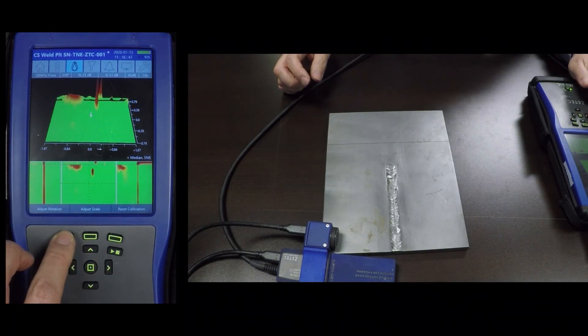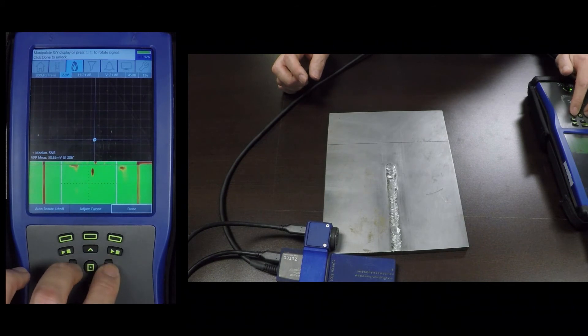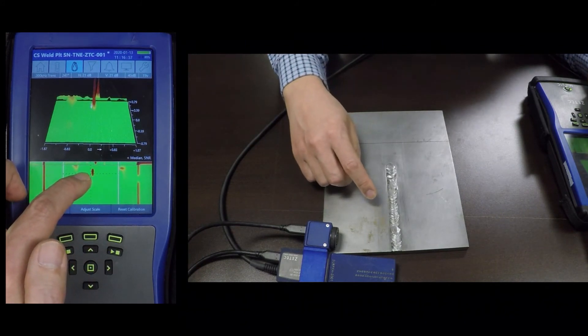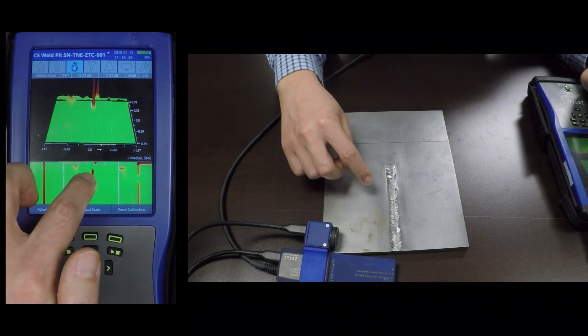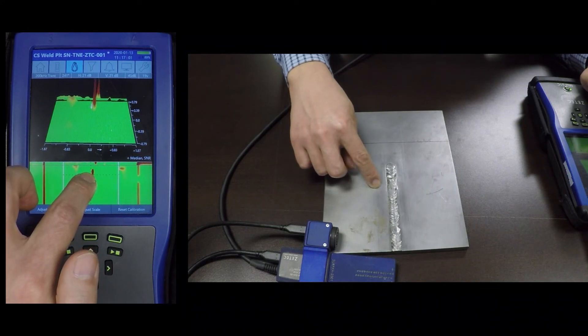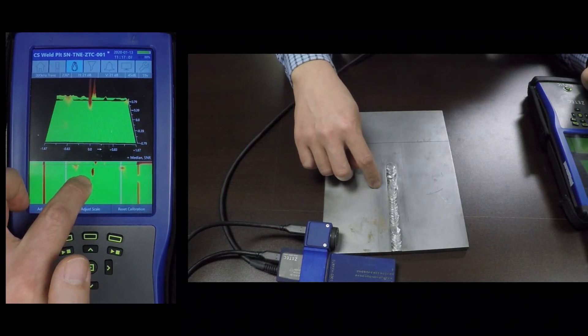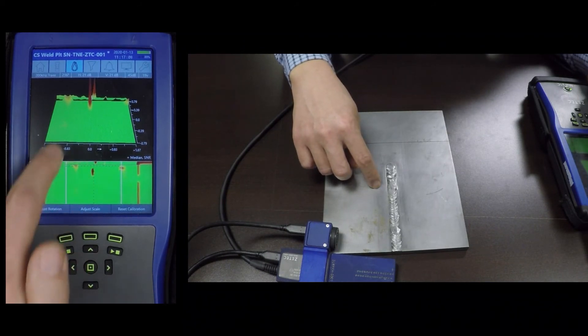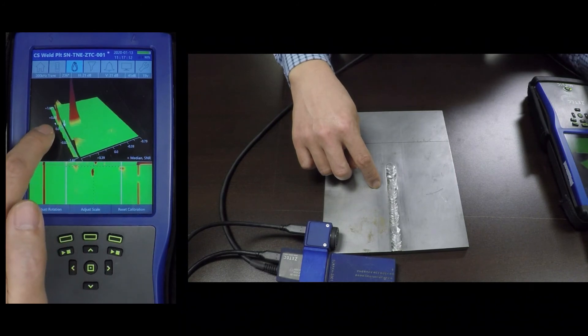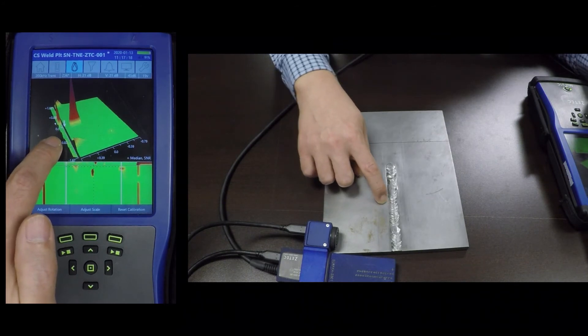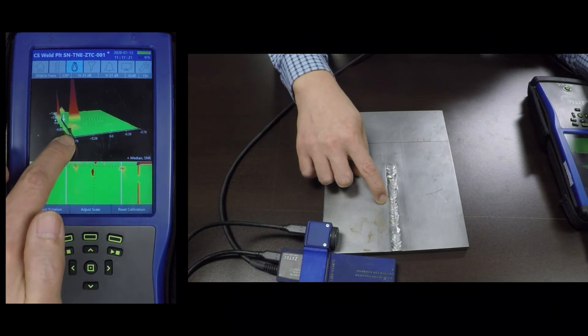So now you can see, this is my transverse notch in the heat affected zone that's being picked up by the array coil. And then what you can see right there on my plus point channel, the plus point coils are picking up the transverse notch in the toe area pretty easily.